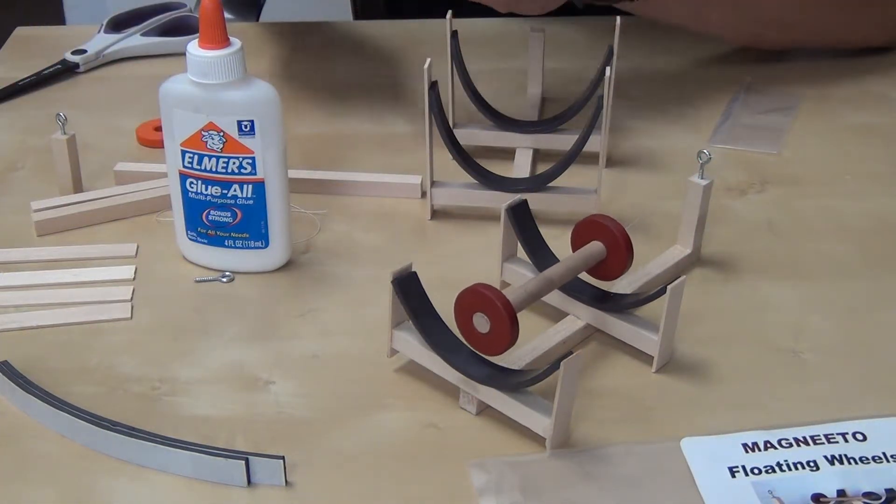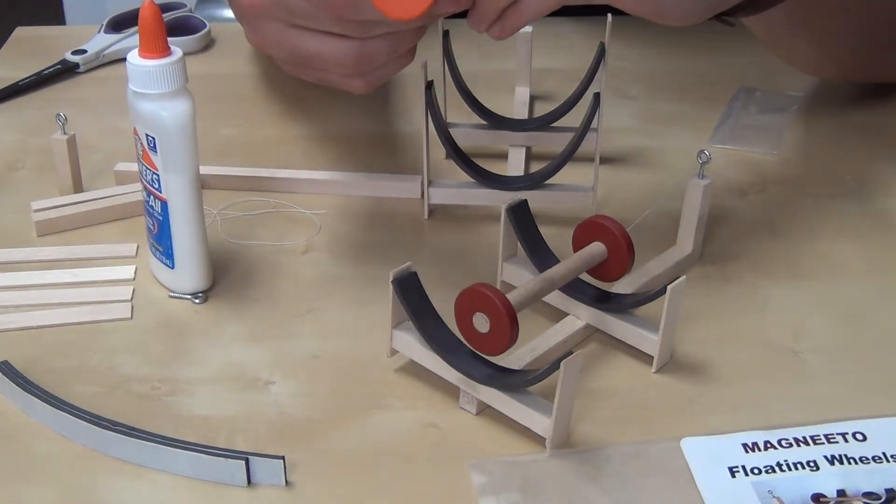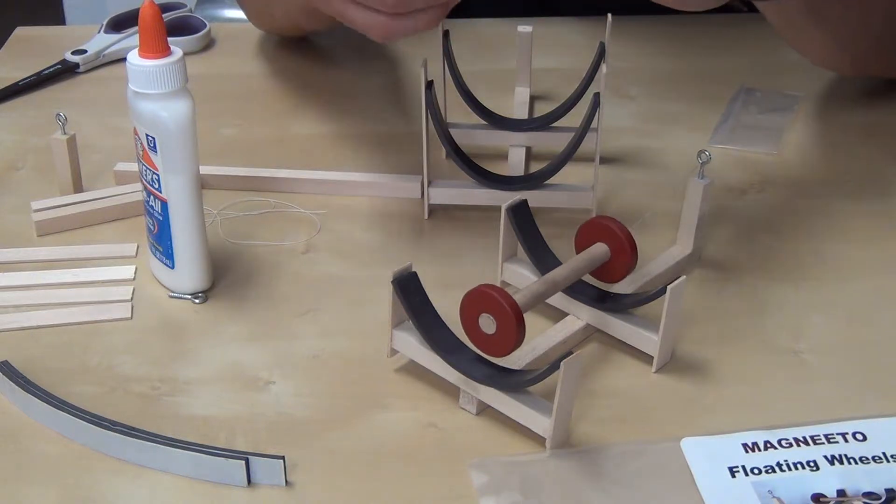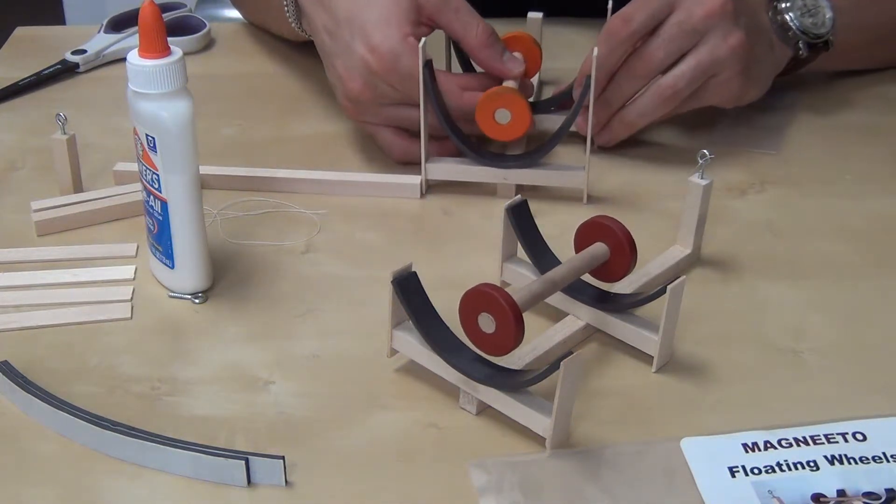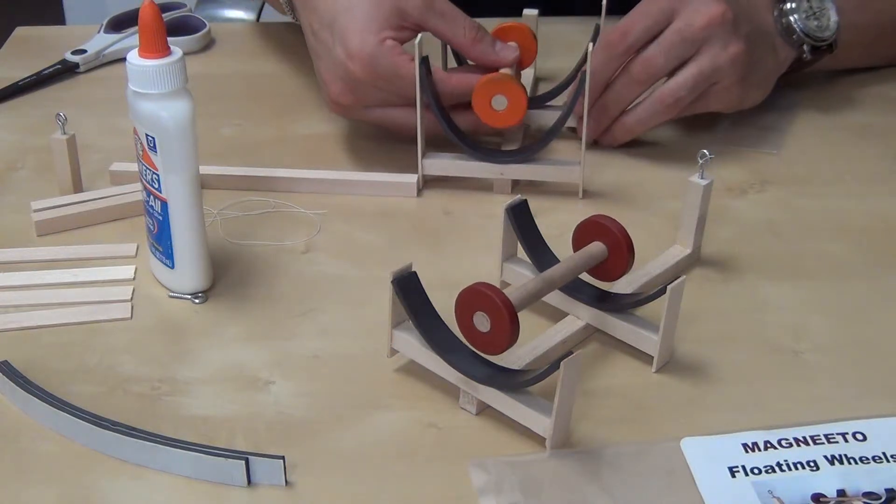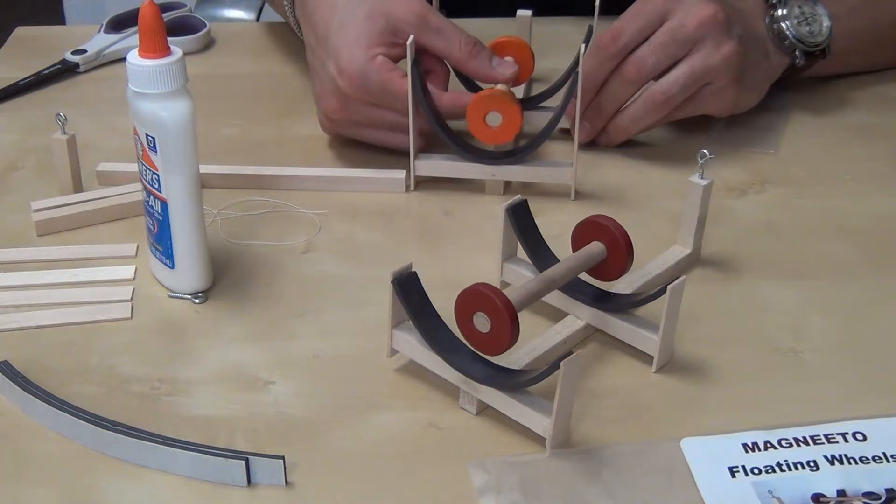But one thing that's important that we want to mention is once we put the ring magnets onto the dowel, it's important to test to see if it attracts or repels. Here is good and here is good. So at this distance, it's good. It repels.